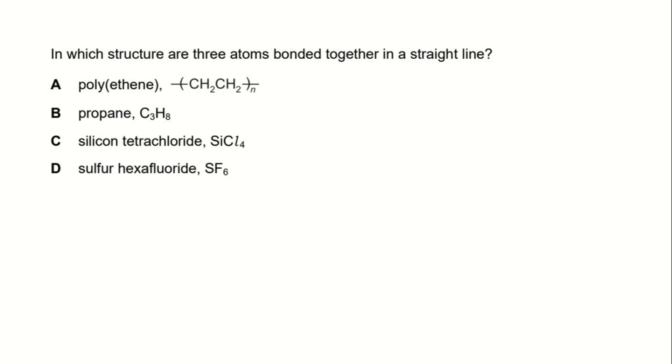In this question, we want to find out which structure in the answers are three atoms bonded together in a straight line. Three atoms bonded together in a straight line means the bond angle of the three atoms will be 180 degrees.